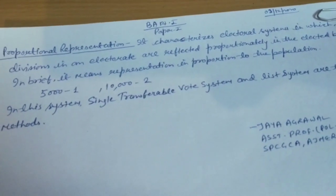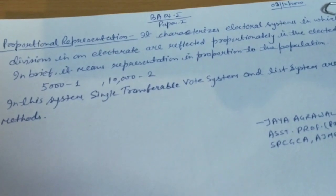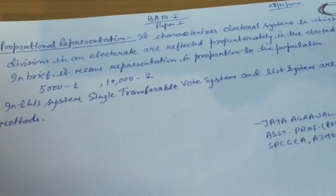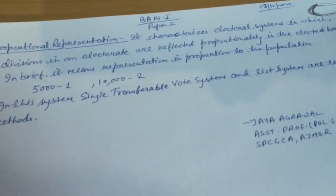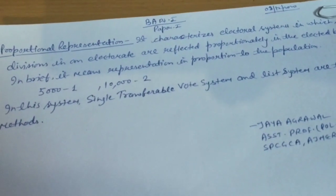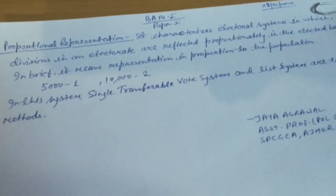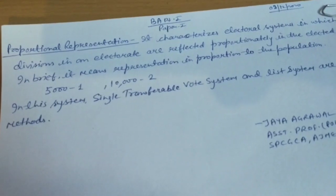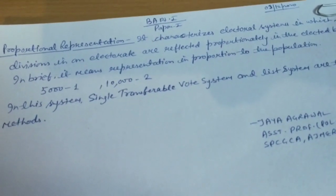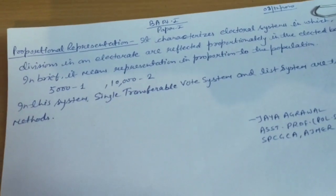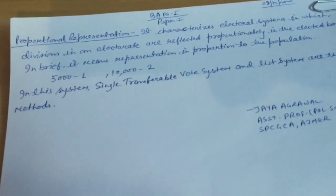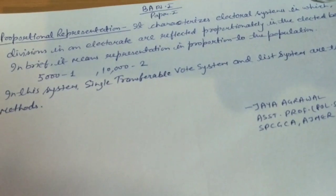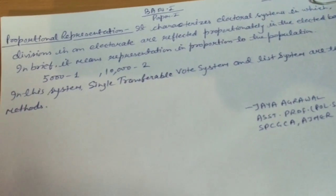For example, if the total number of votes cast is 10 lakh and 100 representatives are to be elected from that constituency, the electoral quota will be 10 lakh divided by 100, which equals 10,000. Now suppose there are five parties A, B, C, D, and E. If party A has secured one lakh votes, it will secure 10 seats. In this way parties divide the seats among themselves. This List System is used in Belgium, Denmark, Sweden, and Switzerland.